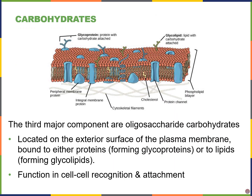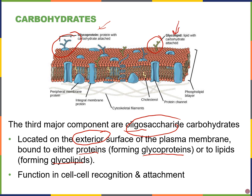The third major component of the membrane are carbohydrates, specifically oligosaccharide carbohydrates. 'Oligo' refers to few — a few monosaccharides in length — and these are always on the exterior surface of the membrane. They're always bound to either proteins, which creates glycoproteins, or bound to lipids, forming glycolipids. Here we can see a glycoprotein and a glycolipid on the right.